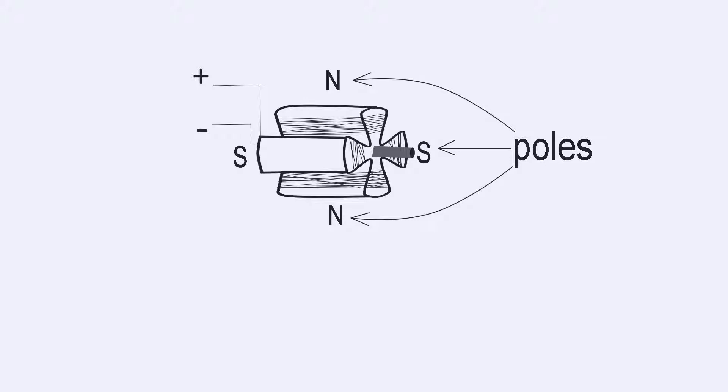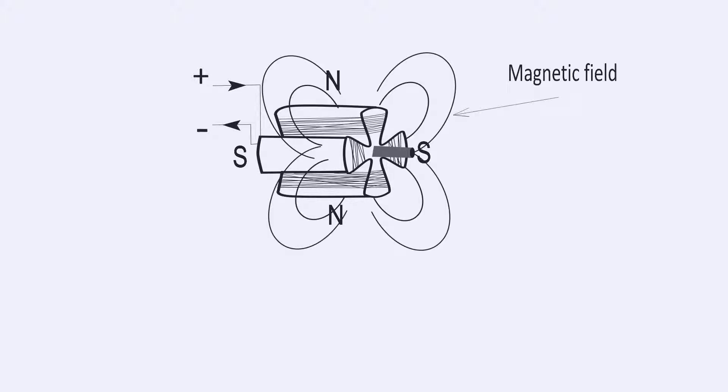For better insight into its working, let's consider a rotor with poles. Rotor coils are excited with a DC power source. The magnetic field produced around it would be as shown.